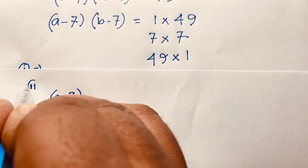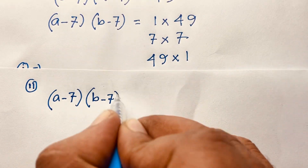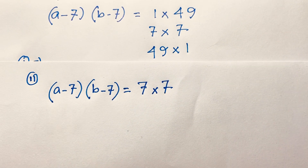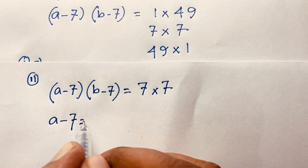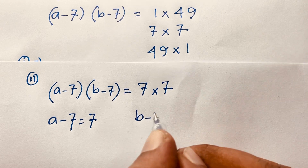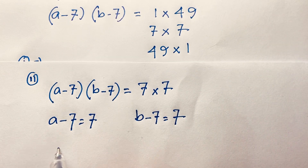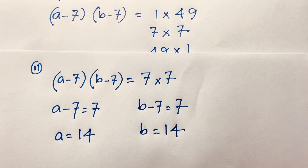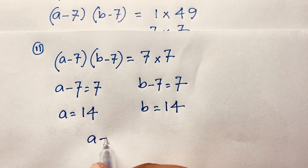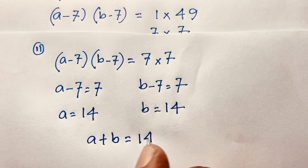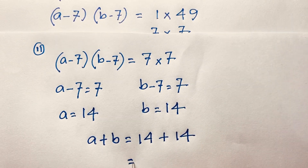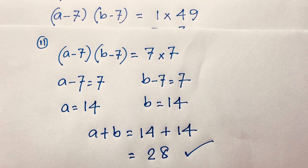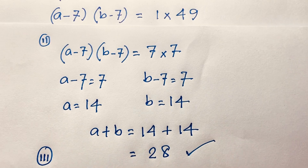Case 2: (a minus 7)(b minus 7) = 7 times 7. So a minus 7 equals 7 and b minus 7 equals 7, giving a equals 14 and b equals 14. Therefore a plus b equals 14 plus 14, which is 28.